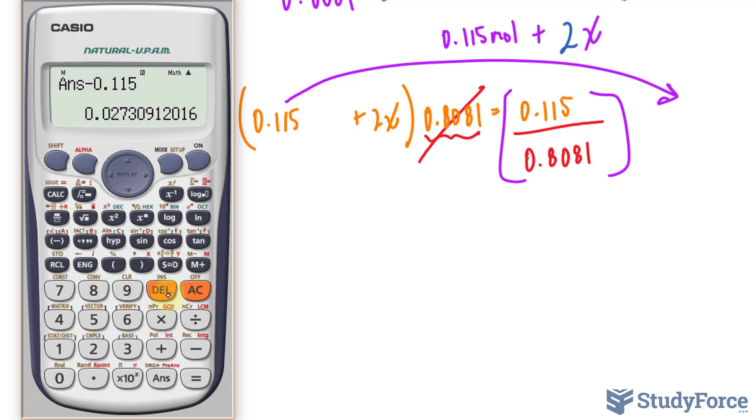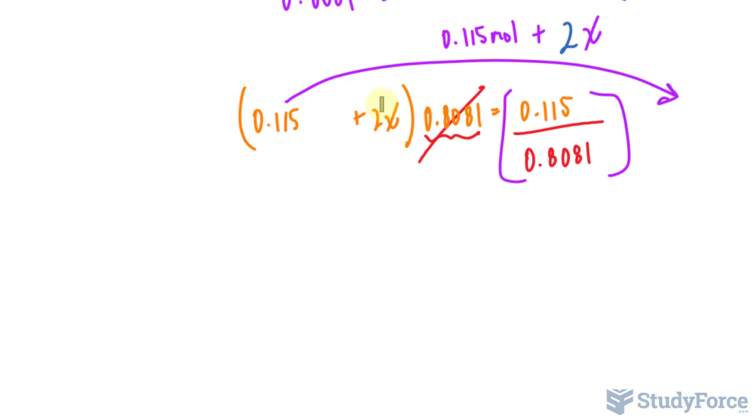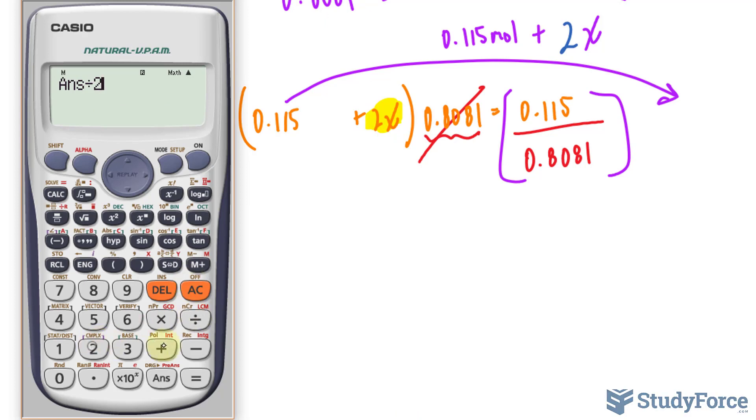And on the left side all we have left is 2x. To isolate for x, we divide both sides by 2, so I'll divide that by 2.